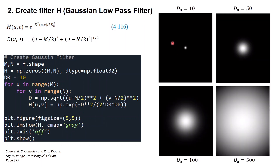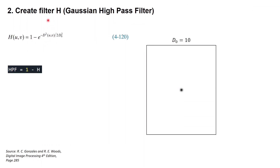Here I have several Gaussian low pass filters with different parameter D0 values. As you can see, parameter D0 controls the size or shape of our Gaussian filter — you can think of D0 as the sigma in a two-dimensional Gaussian function. We can also create a Gaussian high pass filter to sharpen the image.